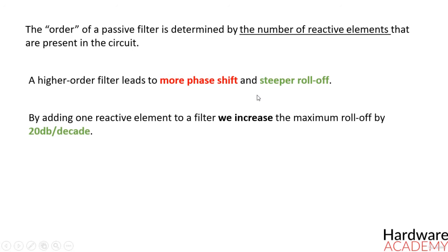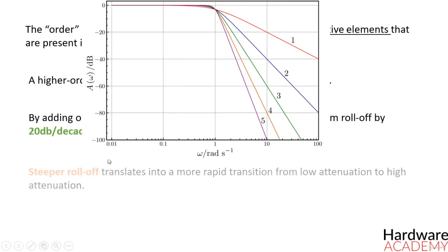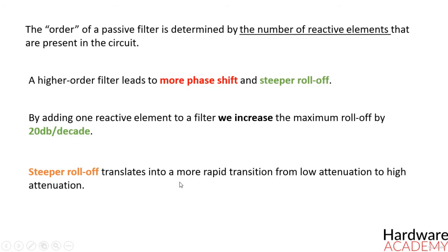By adding one reactive element to a filter — for example by going from first order to second order, or second order to third order — we increase the maximum roll-off by 20 dB per decade. Steeper roll-off translates into a more rapid transition from low attenuation to high attenuation, and this can result in improved performance when the signal does not have a wide frequency band separating the desired frequency components from the noise components.